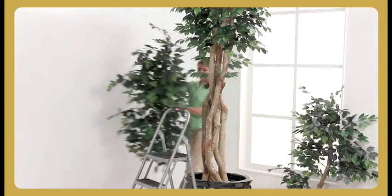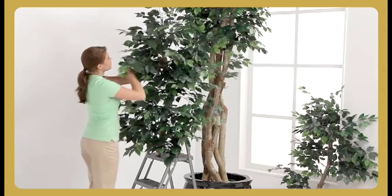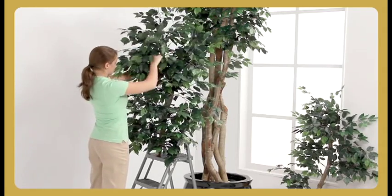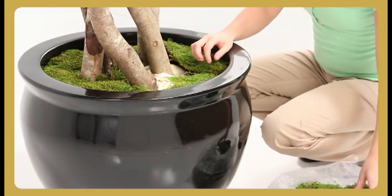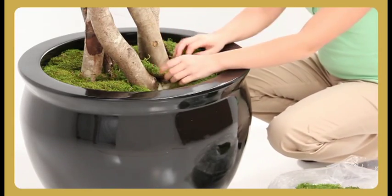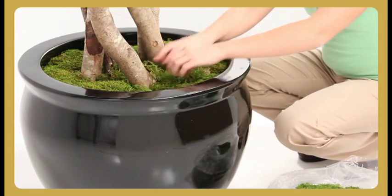The top branches of the tree are loosely packaged in two boxes. Shape each branch to desired fullness before connecting the tops to the base of the tree. A bag of green sheet moss is included with every tall tree we make. Simply place the sheets of moss on the foam surface inside the container, then tuck to the edge of the rim.